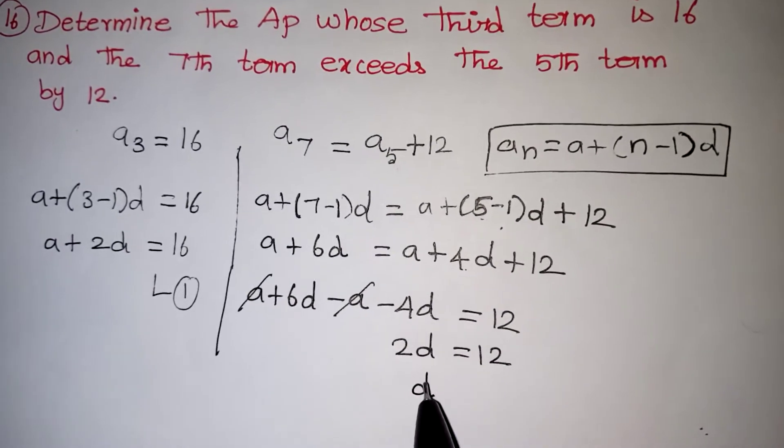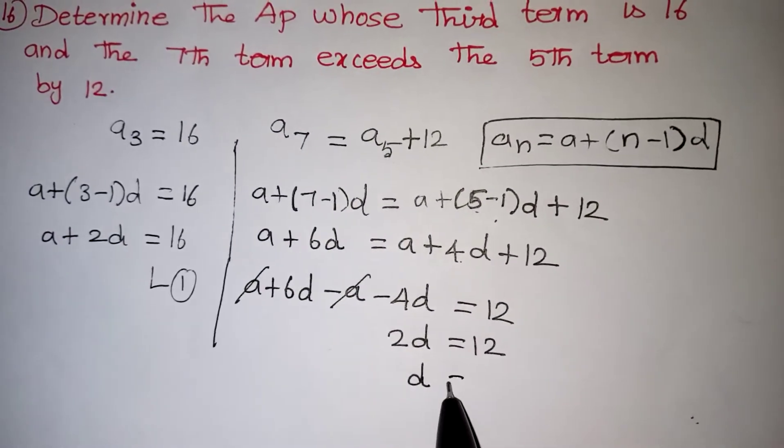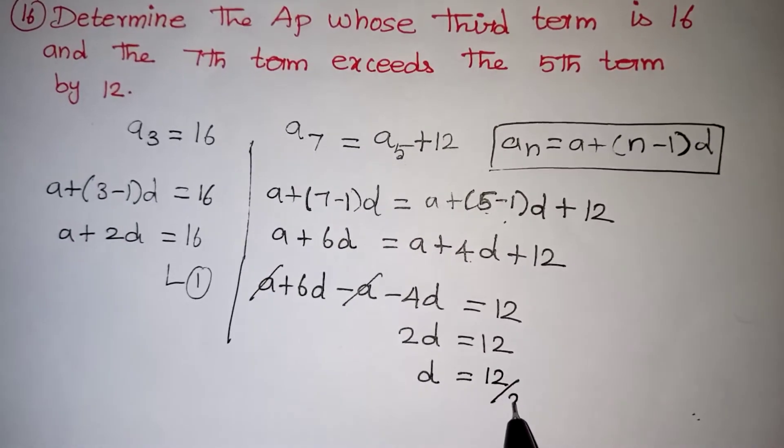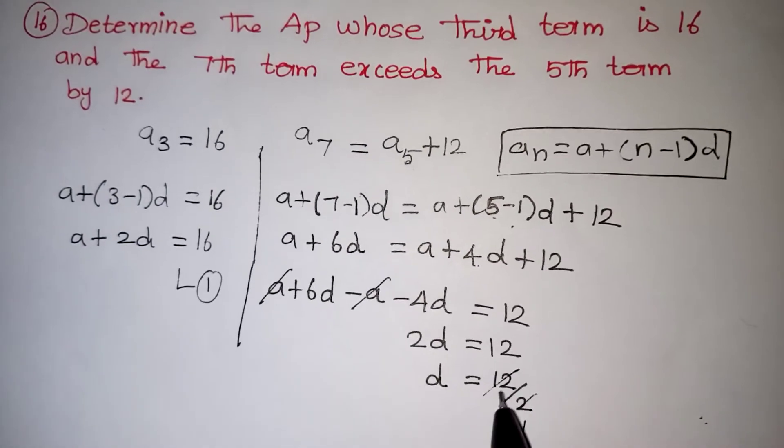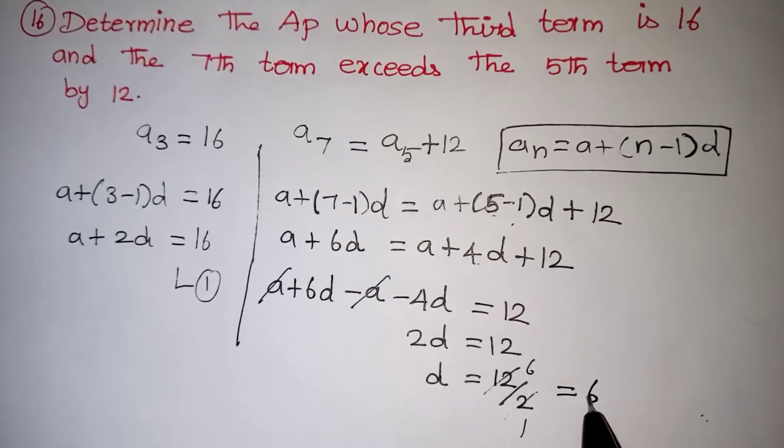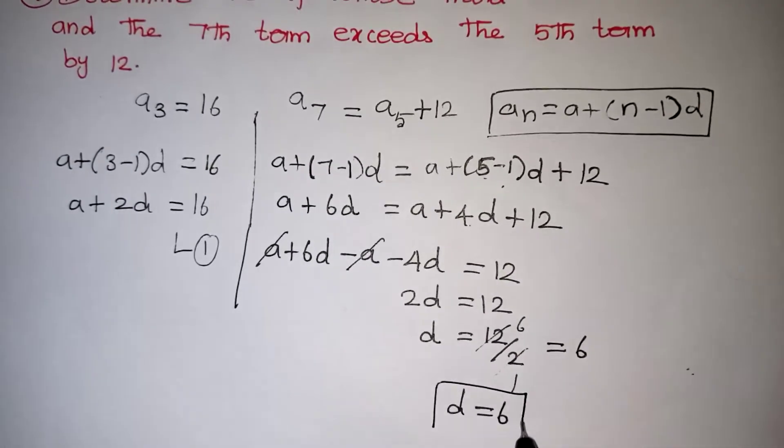D equals, if you bring multiplication 2 to the other side, it becomes division. So 12 by 2, which equals 6. D equals 6, we are getting.